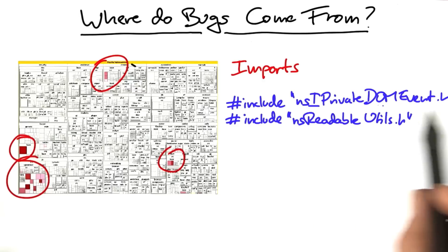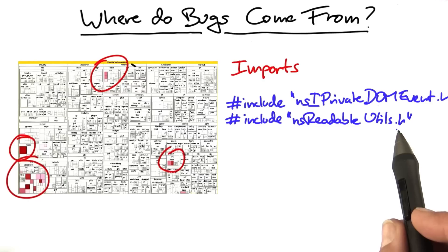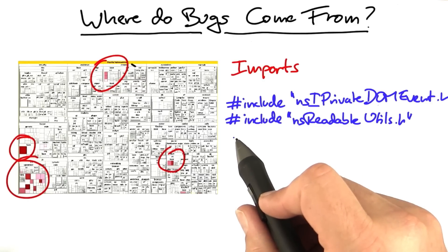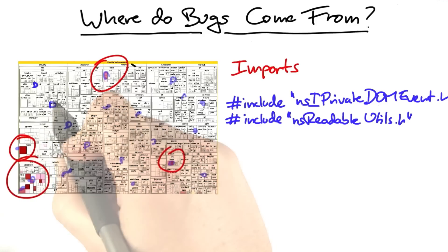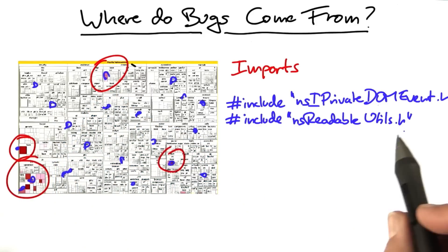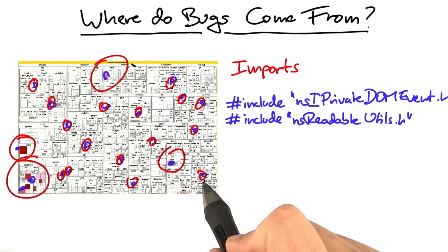...that is, used these specific APIs or interacted with these specific APIs, then your code would be doomed. Because the 20 modules that also included these two files all had at least one security issue. Likewise, in Eclipse...